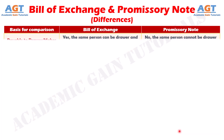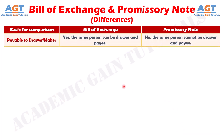Number nine: In a Bill of Exchange, the same person can be the drawer and payee, whereas in a Promissory Note, the same person cannot be both the drawer and payee.